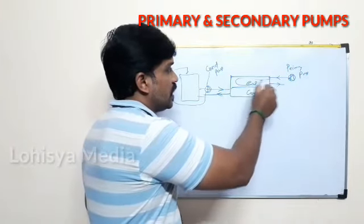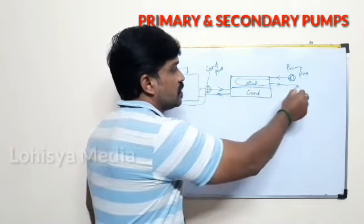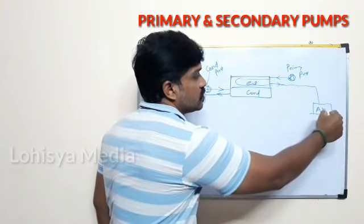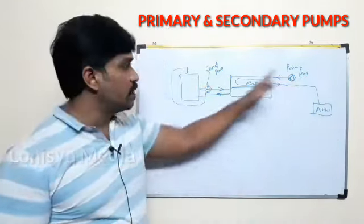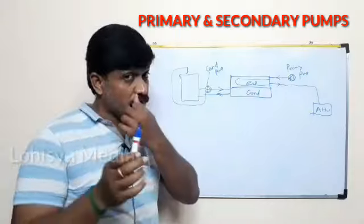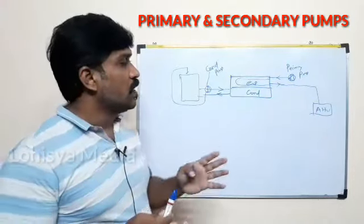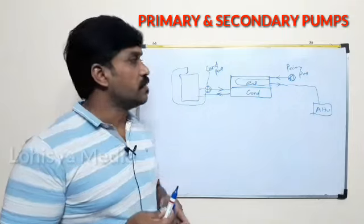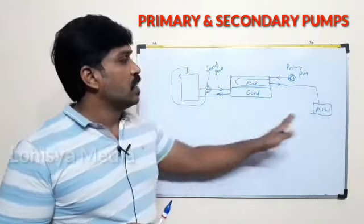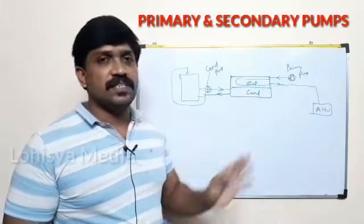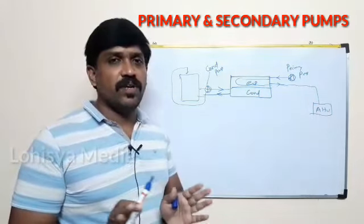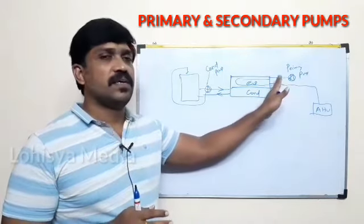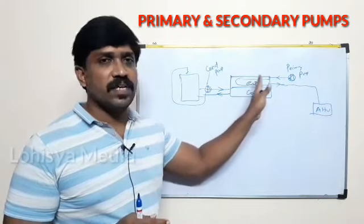You can use a flow meter to measure the primary pump. The secondary pump is a bit different. The capacity, pump capacity, volume flow, and head will be reduced compared to the primary pump. This is based on the chiller's requirement.